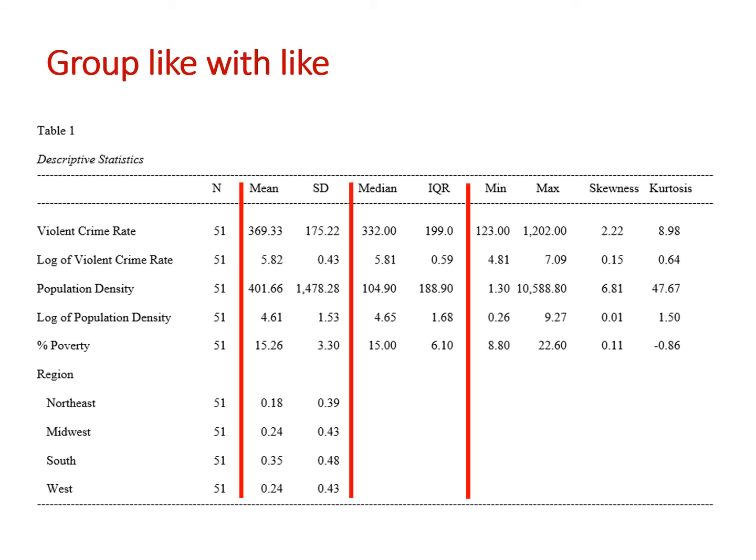Let me mention a few simple rules that are modifications of the themes we saw with frequency tables. When using descriptive statistics, it helps to match like with like. For example, the mean goes with the standard deviation and the median goes with the interquartile range. It's helpful to put those together because we'll often say the distribution has a mean of x and a standard deviation of y, or a median of x and an interquartile range of y. I also include some other statistics off to the far right — the minimum goes with the maximum, and skewness goes with kurtosis.